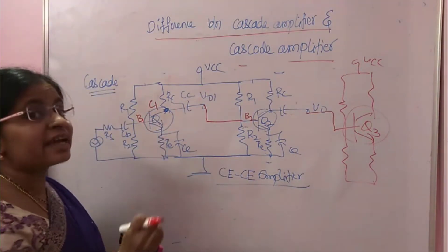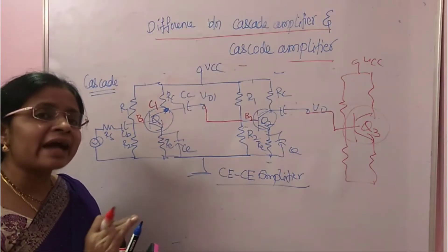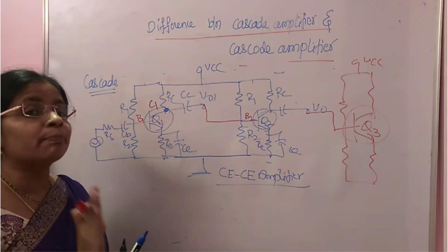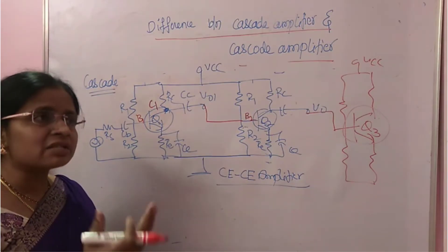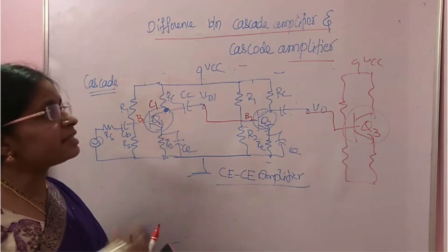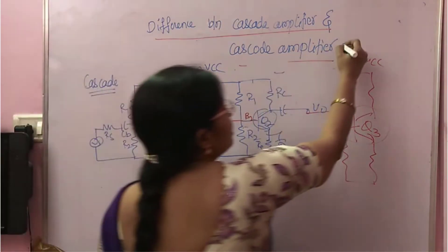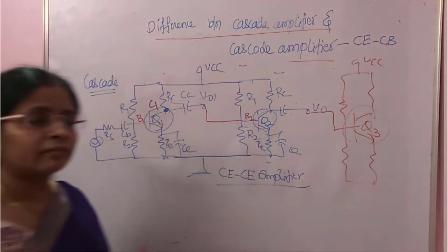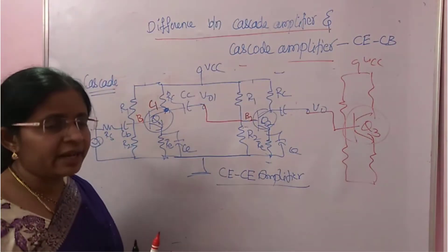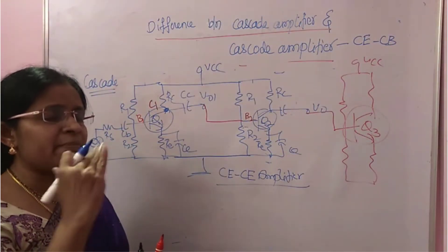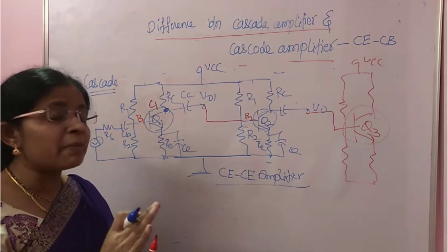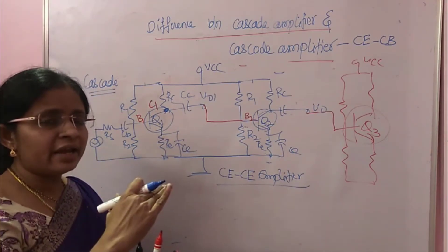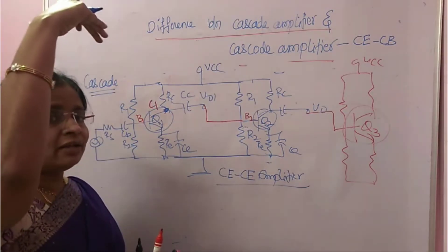But what about cascode? In the cascode amplifier, the series connection is not used. An example of a cascode amplifier is CE-CB. The first stage is CE and the second stage is CB. The CE-CB circuit is not in series — first is CE, and on the top of it there is CB.